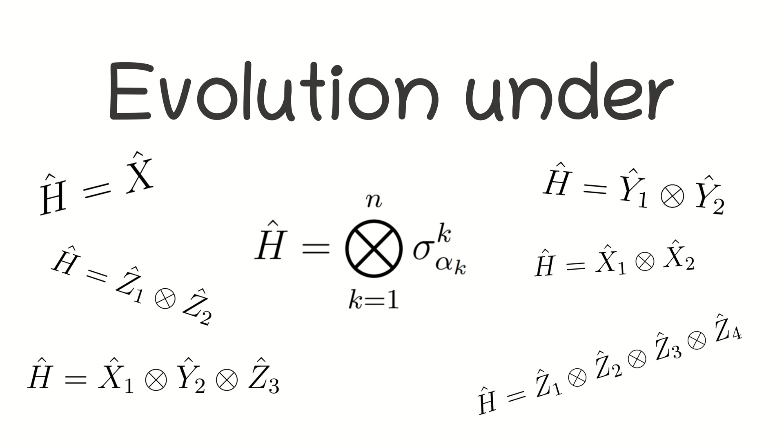when a Hamiltonian consists of a tensor product of Pauli operators. Examples of such Hamiltonians are presented on the screen. In this video you will learn how to construct a quantum circuit to simulate a Hamiltonian consisting of an arbitrary tensor product of Pauli operators.